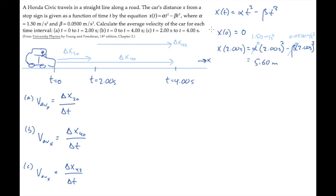Doing the same thing when t equals 4 seconds, we calculate 20.8 meters. So we can record those positions over here and now come back and calculate the average velocities.